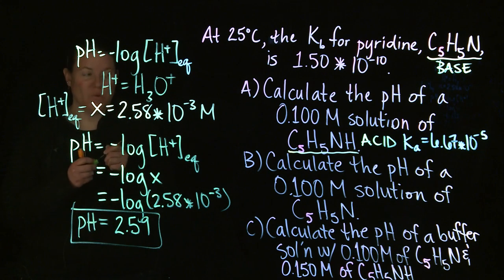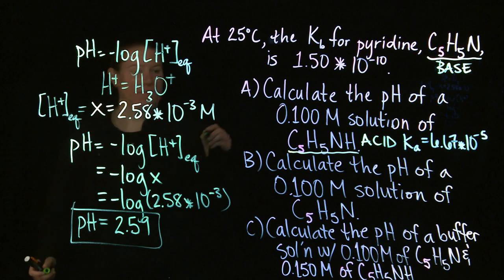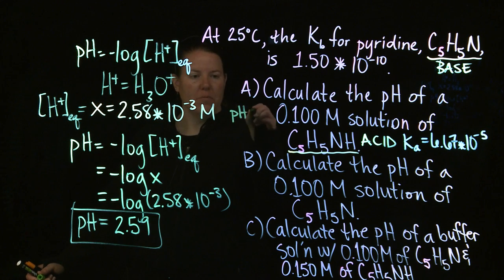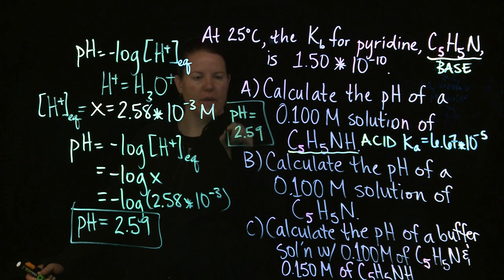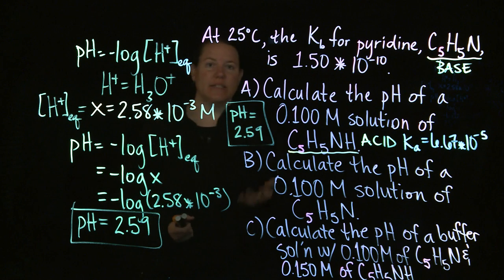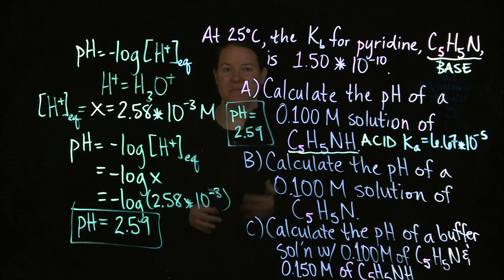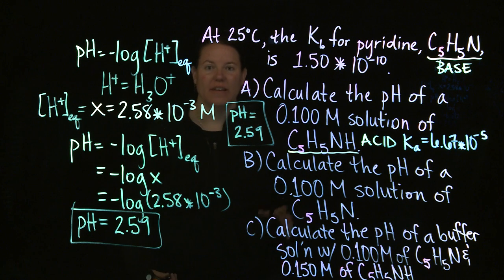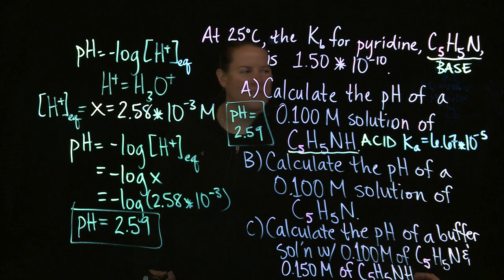So our pH is equal to 2.59. All of that work was just for the first question. And you would expect it to be acidic, this pH, because you have an acid solution. Until next time, we'll do the next part of our series as B, and we'll talk more about pH calculations. Until then, adieu.